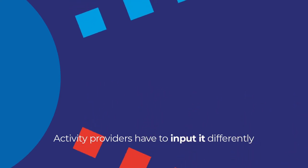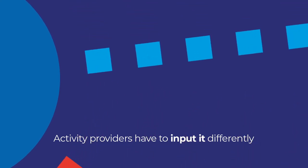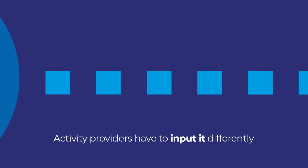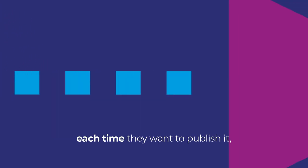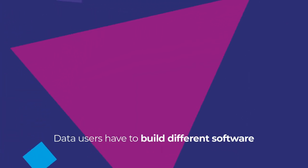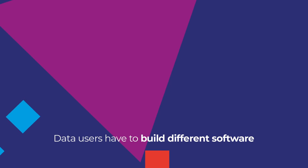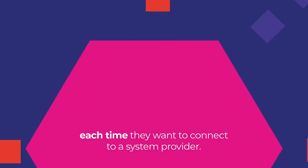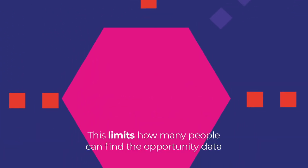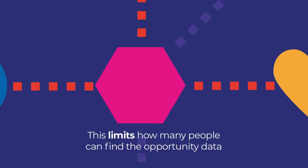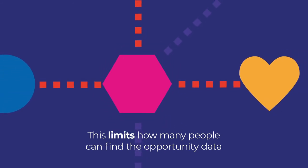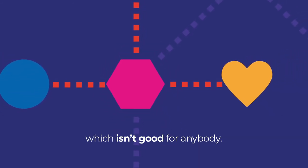At the moment, most system providers and data users format opportunity data in different ways. That means activity providers have to input their opportunity data in different ways each time they publish it, and data users have to build different software each time they want to connect with a system provider. All that limits how many people can find the opportunity data, which isn't good for anybody.